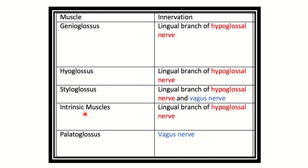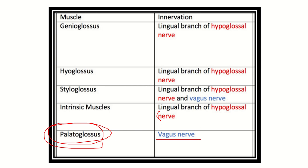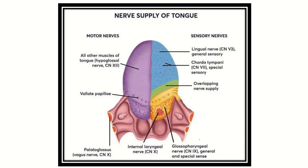Almost all of the tongue muscles are supplied by the hypoglossal nerve except the palatoglossus. The palatoglossus is supplied by the vagus nerve. All the intrinsic muscles are also supplied by the hypoglossal nerve.